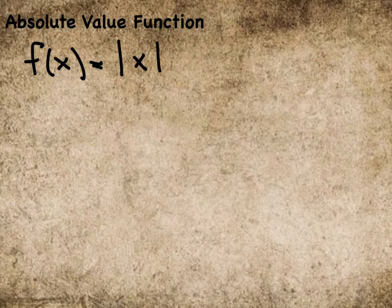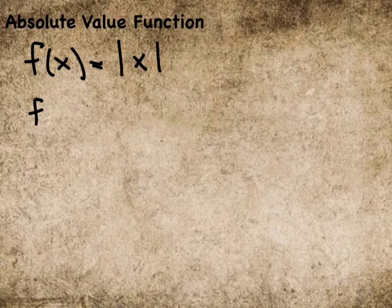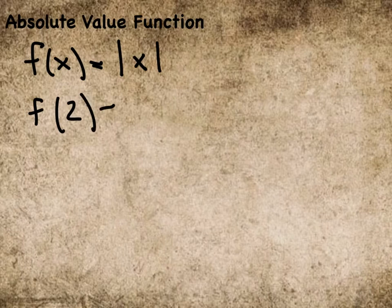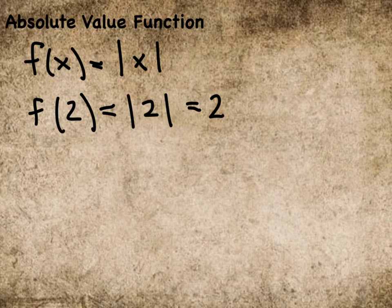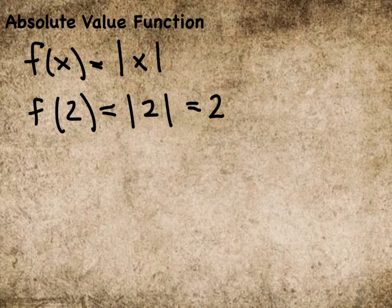And it implies that whatever number you use for x, the absolute value of 2 is just simply 2. And basically it defines itself as just purely the distance from 0. So 2 is just 2 away from 0.